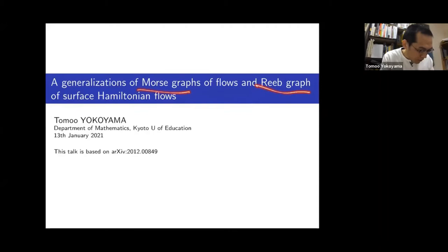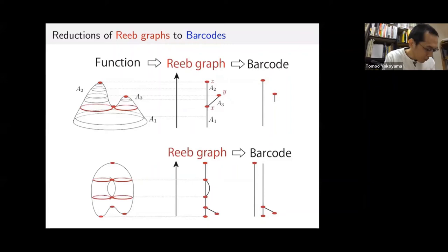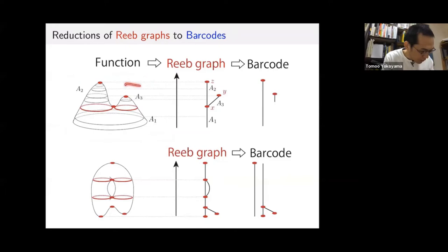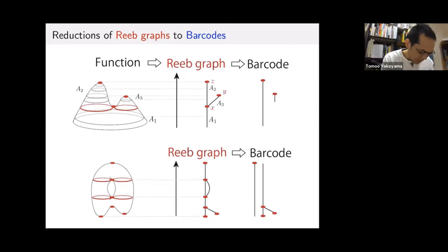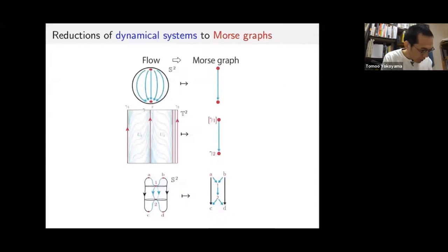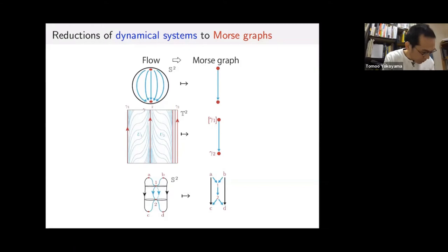These Morse graphs and Reeb graphs are very fundamental notions. Reeb graphs can be obtained from a height function. If you have a height function, you can reduce it into a Reeb graph, and the Reeb graph can be reduced into a barcode. Barcode is a very important object in topological data analysis. This function is reduced to a Reeb graph and also reduced to a barcode. The Morse graph is one fundamental topological invariant of dynamical systems — I will explain how to convert a flow to a Morse graph later.